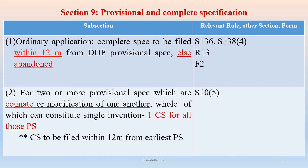Subsection 2: For two or more provisional specifications which are cognate — i.e., one is a modification of the other — the whole of which can constitute a single invention, one complete specification can be filed for all those provisional specifications. That complete specification needs to be filed within 12 months from the earliest provisional specification. The related other section is Section 10, Subsection 5.